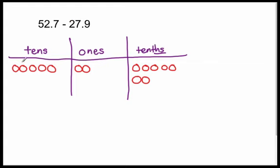And from that, I am going to subtract two tens, seven ones, nine tenths. So first I'm going to start with nine tenths. Let's look at how many tenths I have. I have seven tenths. Do I have nine or more tenths? No, I do not. So I must do something.